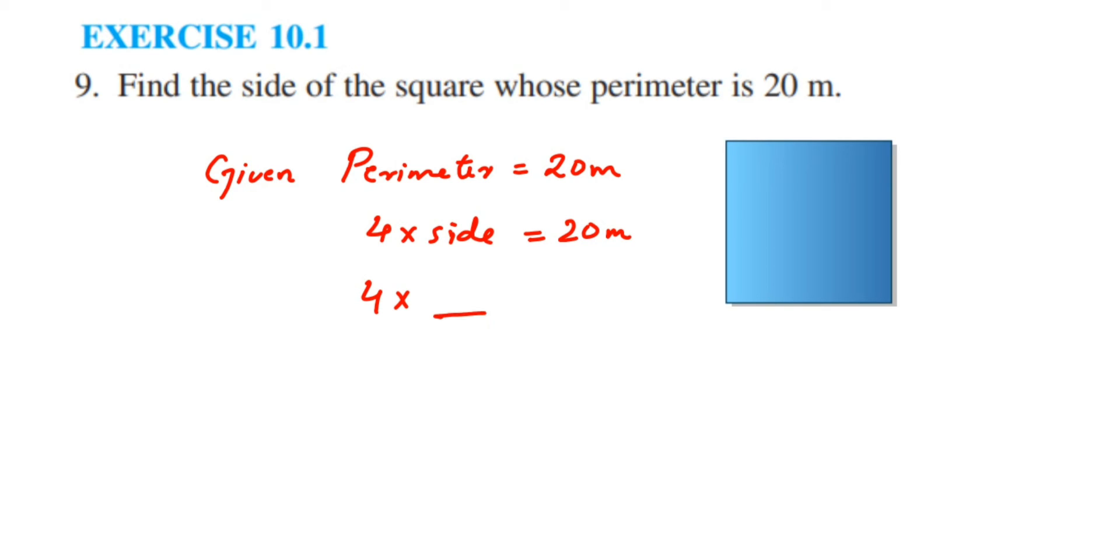So 4 times 5 is equal to 20, so each side will become 5 meters. This is how we can solve this. Or if you have learned how to solve equations, this is one logic way we can apply.